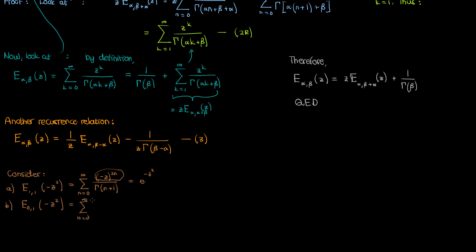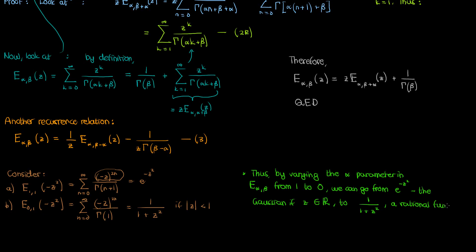And when you apply equation 1 to the function in b, this is what you get. And if the magnitude or absolute value of z is less than 1, then you can write this infinite series as 1 over 1 plus z squared, just like what we did before. So by varying the alpha parameter in the Mittag-Leffler function from 1 to 0, we went from the exponential of negative z squared, the Gaussian, to this rational function.